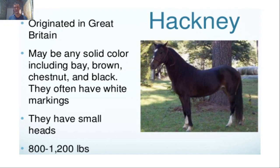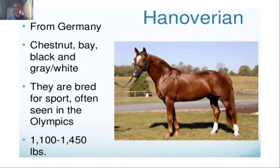The Hackney is a warm-blooded, lighter breed from Great Britain. It may be any solid color including bay, brown, chestnut, and black, with white markings. Their head is small, and they weigh around 800 to 1,200 pounds. Next, the Hanoverian from Germany comes in chestnut, bay, black, or gray/white. They are bred for sports — including racing and equestrian events with hurdles — and weigh around 1,100 to 1,450 pounds.